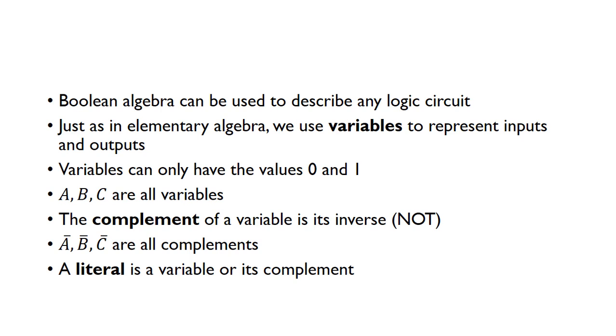So in this example, A, B, and C are all variables. When we take a variable's inverse, for example using a NOT gate, we call that the complement. So A bar, B bar, and C bar are all complements. A literal is a variable or a complement, so A and NOT A are literals.